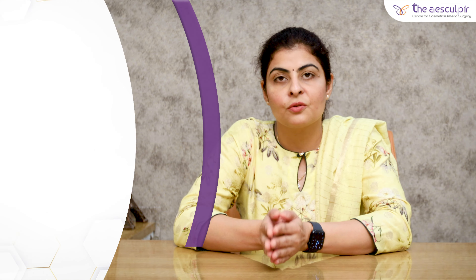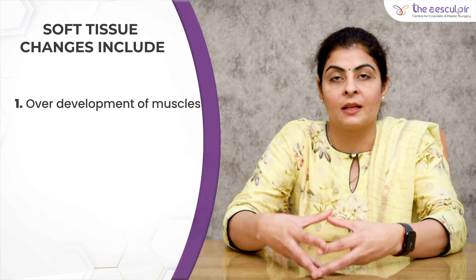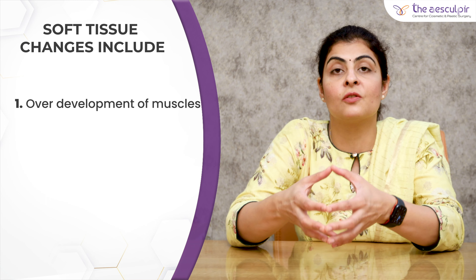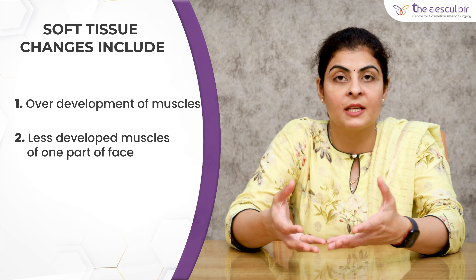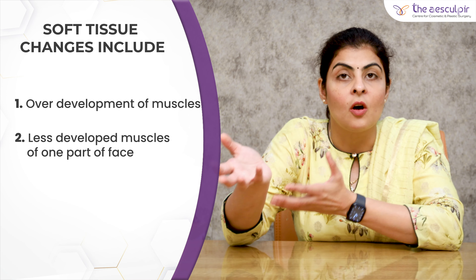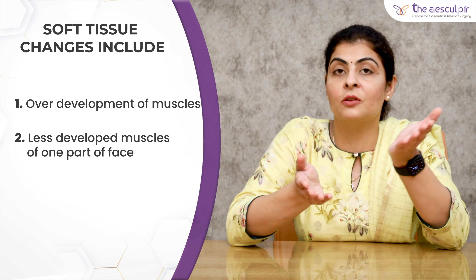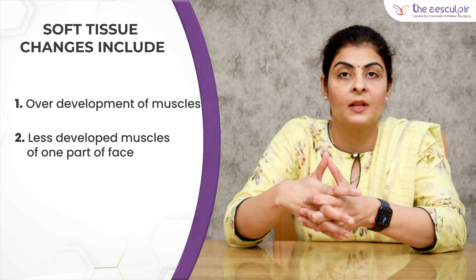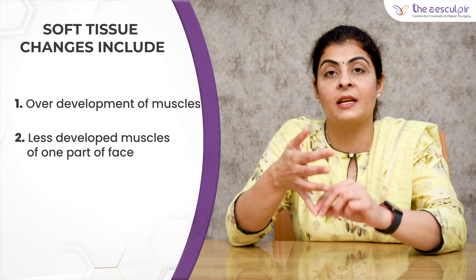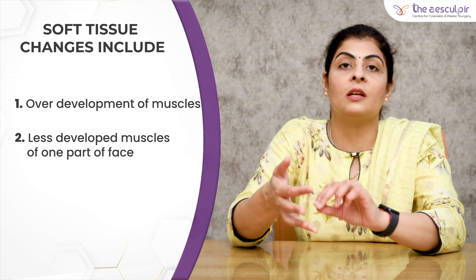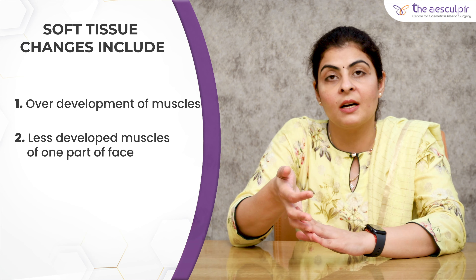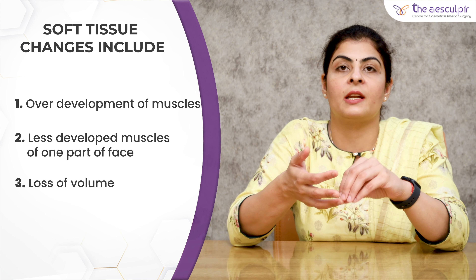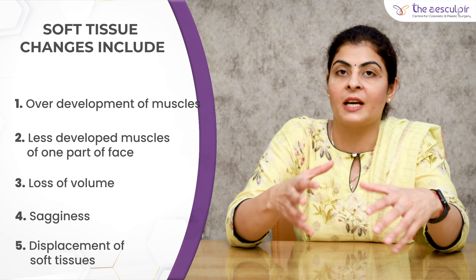If we come to soft tissue — muscles of facial expression, muscles of eating, muscles of mastication — one side may be overdeveloped, making that part of your face fuller, while the other part seems less developed because one set of muscles is overused or hypertrophied. Similarly, one side's soft tissue can be less developed or the other side can have overgrowth. With age, there can be loss of volume of soft tissue, or sagginess and displacement of soft tissue.